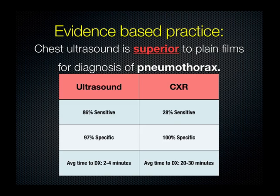It has also been shown that chest ultrasound is superior to plain films for diagnosis of pneumothorax, especially in the supine patient. Ultrasound is much more sensitive than chest x-ray and similarly specific. In a supine patient with a pneumothorax, the air is anterior, and therefore a chest x-ray is not likely to show a pleural line. The average time to diagnosis of pneumothorax with ultrasound is just a few minutes, whereas there can be a significant delay with chest x-ray.